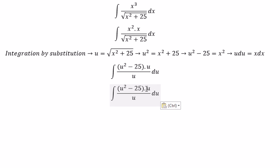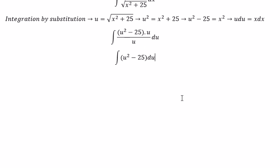U divided by u, so you got about u squared minus 25. And now we can get the final answer.